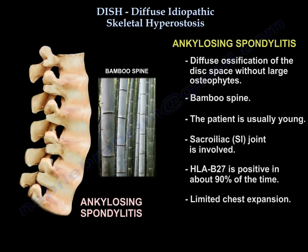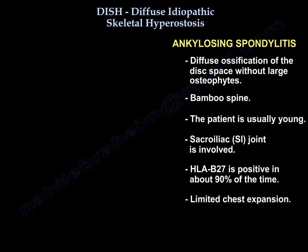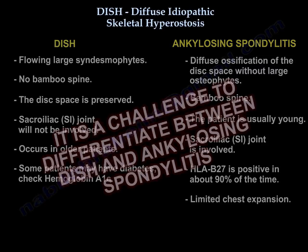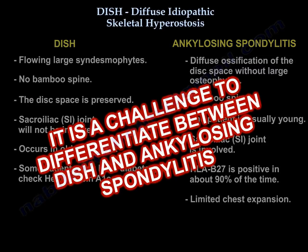In ankylosing spondylitis, there is diffuse ossification of the disc space without large osteophytes, and there is bamboo spine. The patient is usually young. There is involvement of the SI joint. HLA-B27 is positive in about 90% of cases. There is limited chest expansion in ankylosing spondylitis. It is indeed a challenge to differentiate between DISH and ankylosing spondylitis.